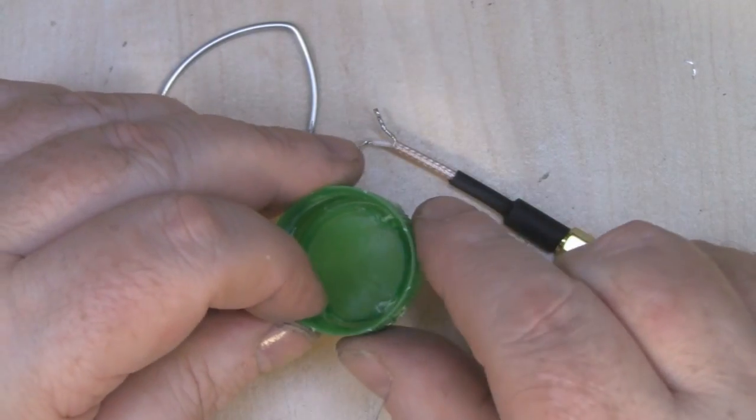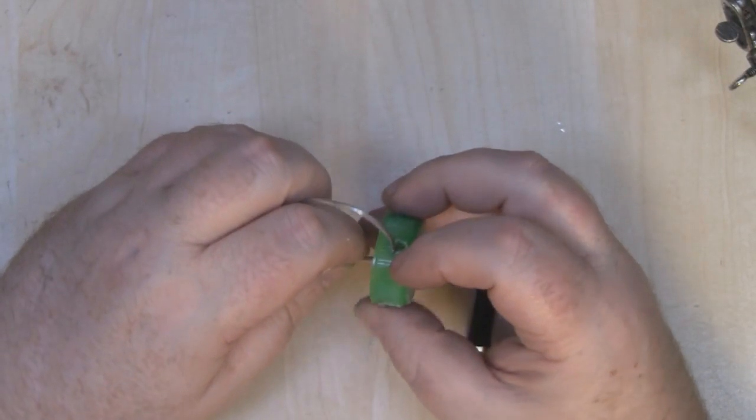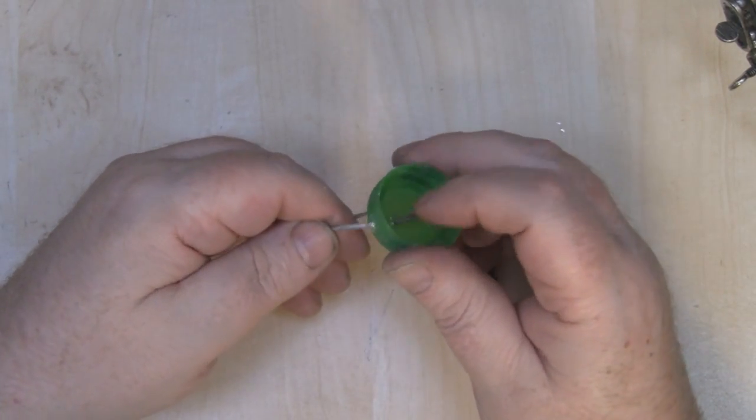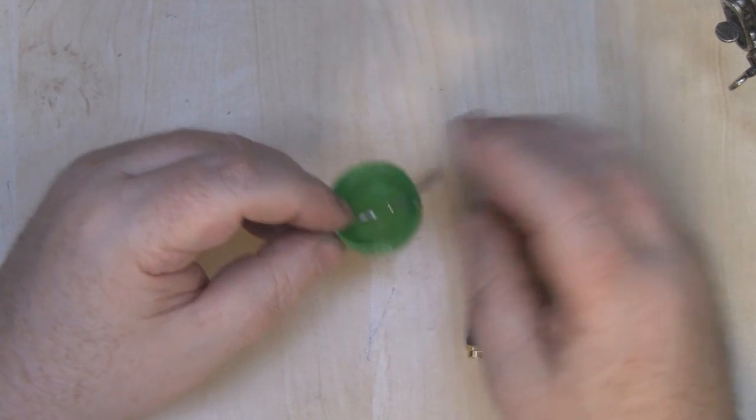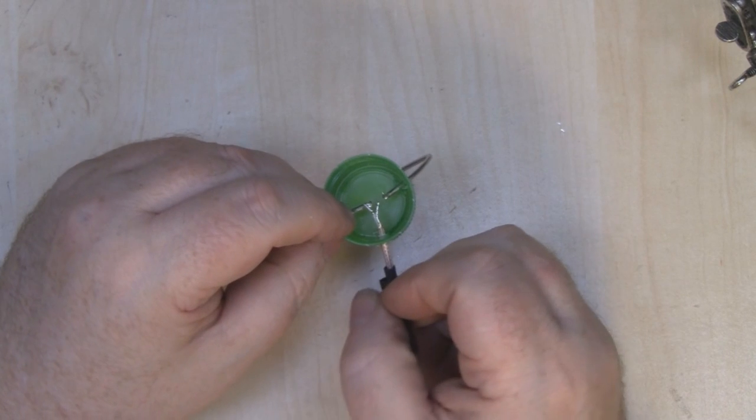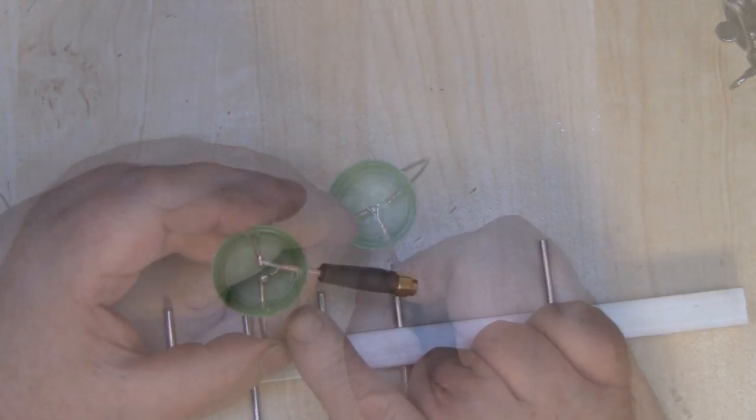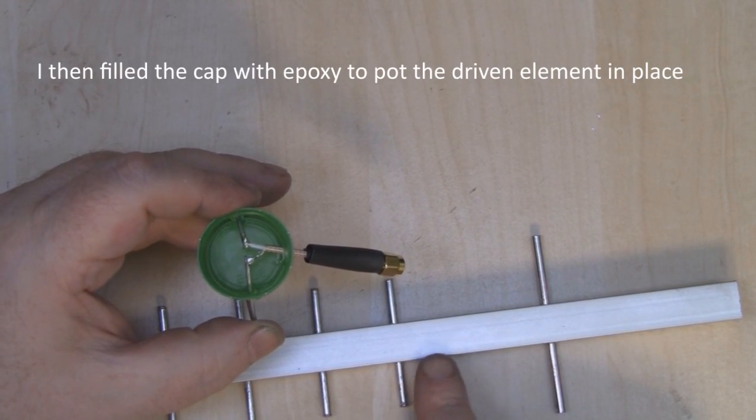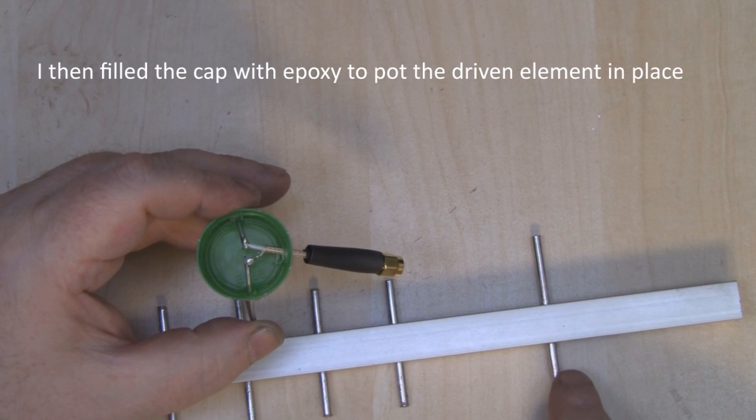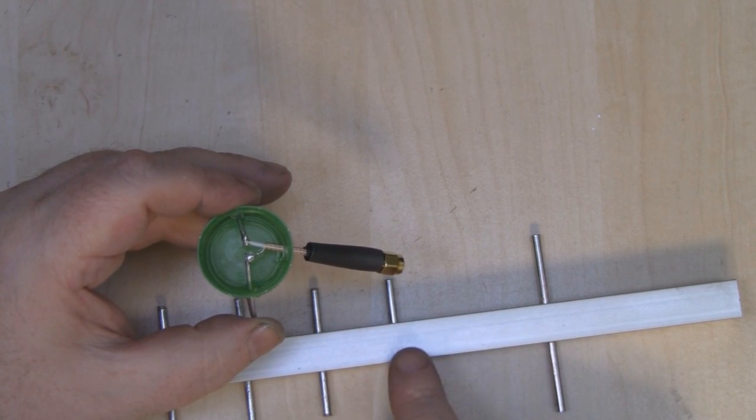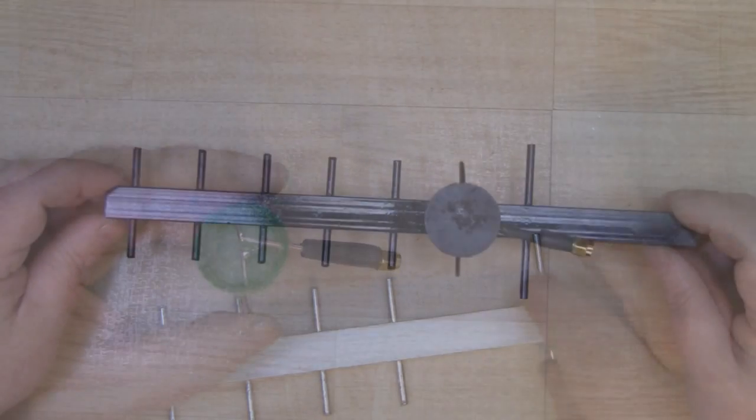To assemble this, I feed the driven element through one of the holes first, then bring it round and feed it through the second one. Then I've got my coax and I feed that through the front hole and solder it all in place. Now that it's all soldered up, I'm going to epoxy it onto the boom itself. Remember, the driven element wants to be directly in the middle of the reflector and this first parasitic element—30 millimeters from the back reflector and 30 millimeters from that first parasitic.